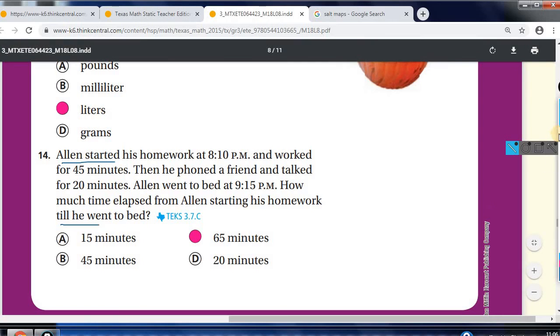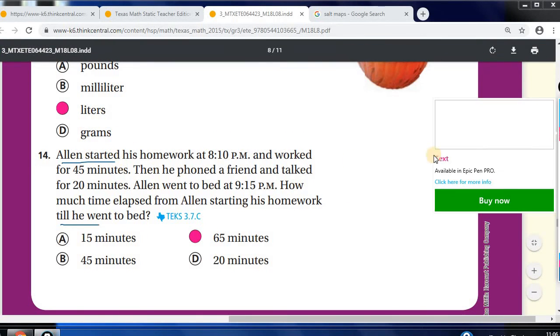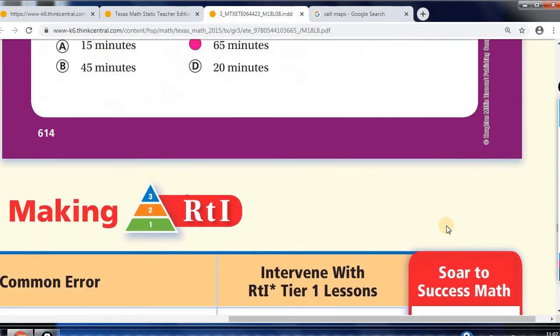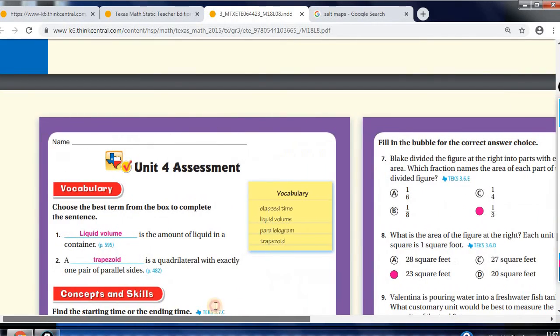We have another time question here. Alan started his homework at 810 and worked for 45 minutes. Then he phoned a friend and talked for 20 minutes. Alan went to bed at 915 p.m. How much time elapsed from Alan starting his homework until he went to bed? How much time elapsed? Well, you just add these two. That's the time that elapsed between here and here. And if you put it in the number line, 810 would be here, 915 would be here, and then this would go right here. And it'd be 65 minutes, which is your answer right here. I know these are getting very easy for you.